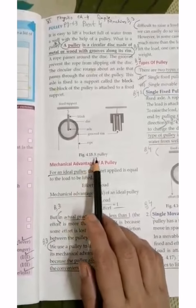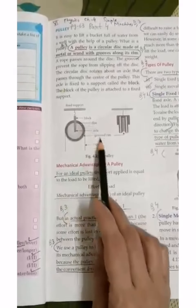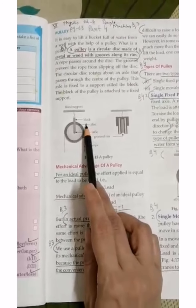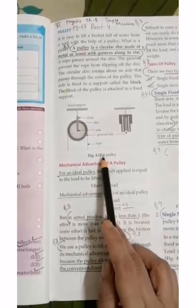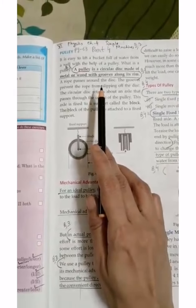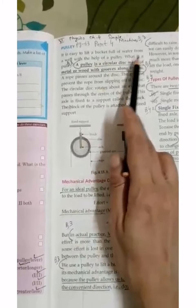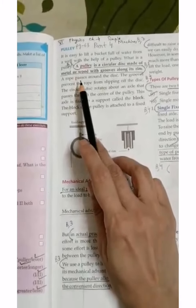Look here in Figure 4.15. There is a pulley here. All parts are marked: Rope, Groove, Rim, Axle, Disc, and Block. Everything is given here. We can pull a bucket from a well using this. So you will go through this Figure 4.15.